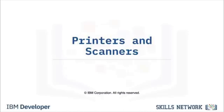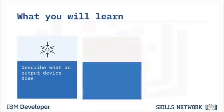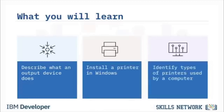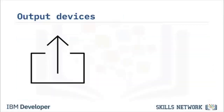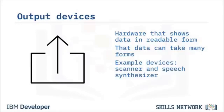Welcome to Printers and Scanners. An output device is any piece of hardware that converts information into a human-readable form — that output can be text, graphics, tactile, audio, or video. Examples of output devices include monitors, printers, speakers, headphones, projectors, GPS devices, sound cards, video cards, and braille readers. A speech synthesizer produces verbal output. A computer can function without an output device, but there is no way to determine what it is doing.